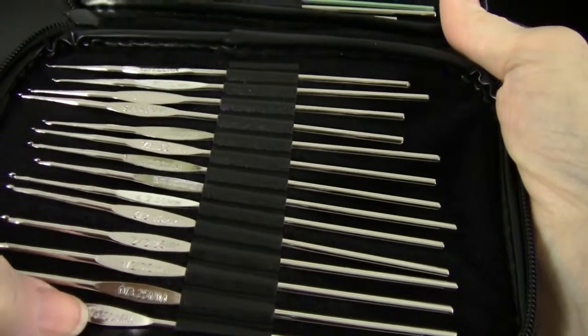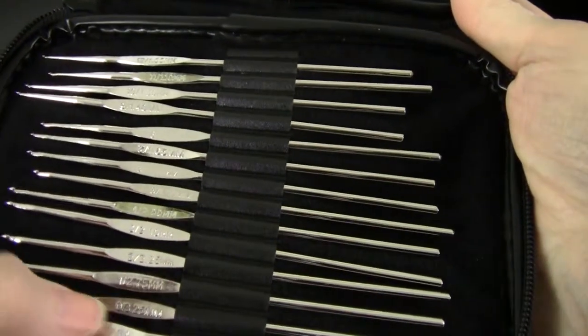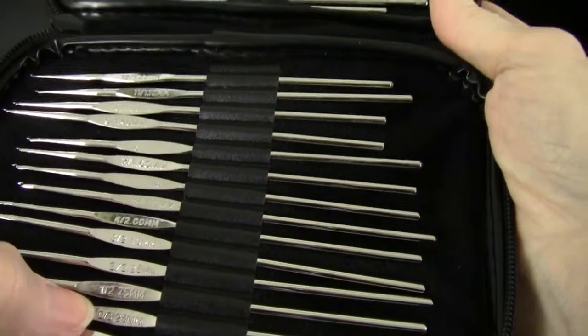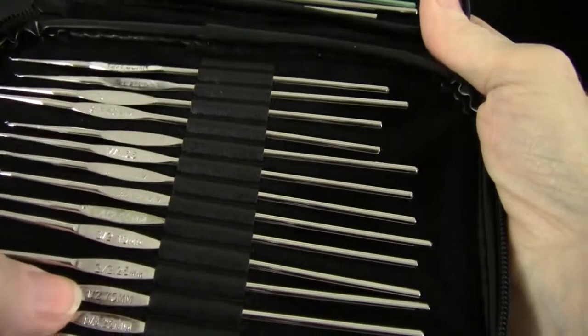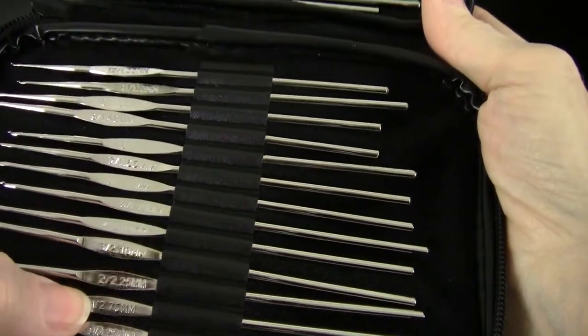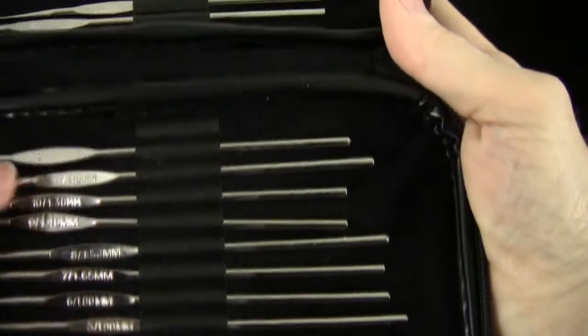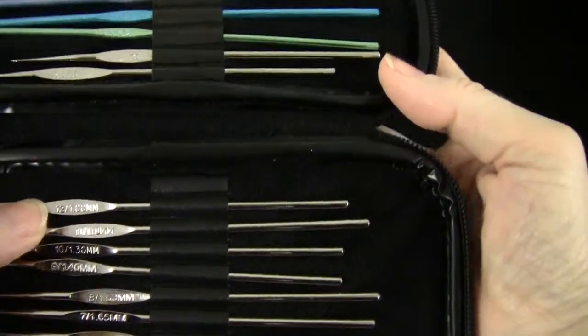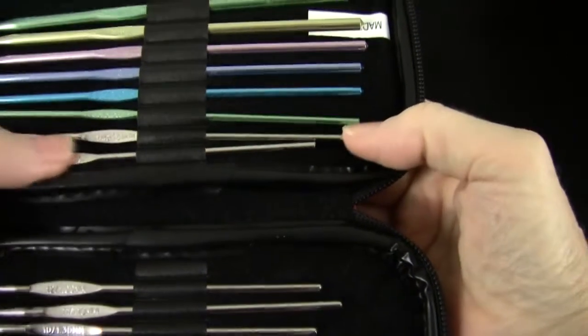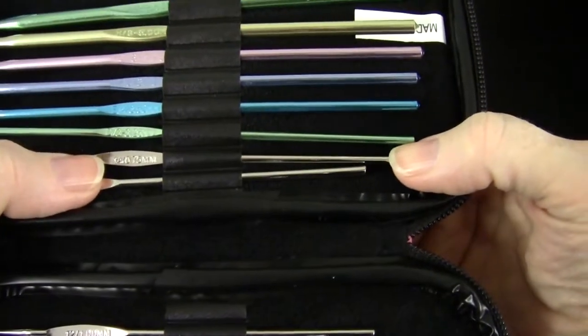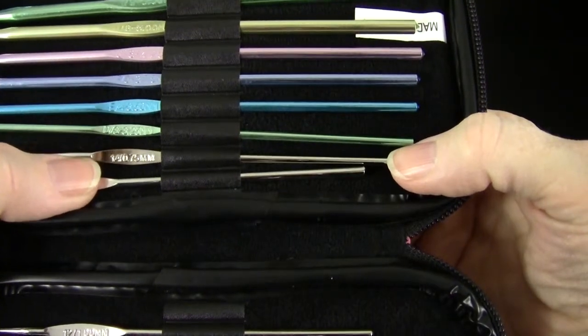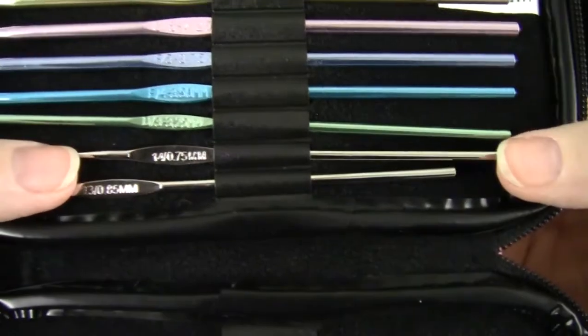And it goes all the way up to—you have a zero, a one, a two, a three, all the way up to a 12. And then there's a 13 and a 14 in here. And the 14 I think says is 0.75. You could probably see it on the video here. I think it's a 0.75 millimeter.